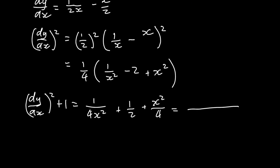To find the common denominator and make this into one fraction, what we have is 4x squared. This will just stay as 1. And to make this 2 into 4x squared, we have to multiply by 2x squared. So plus 2x squared, because we times the numerator 1 by 2x squared. Then to make this 4 into 4x squared, we times by x squared — what we do to the denominator, we do to the numerator. So x squared times x squared is x to the power of 4.